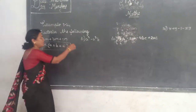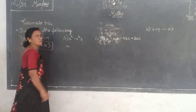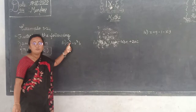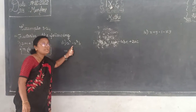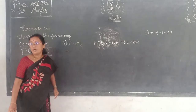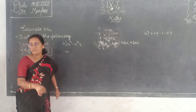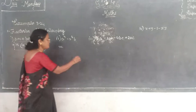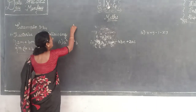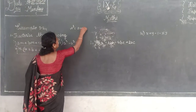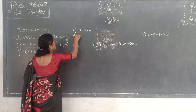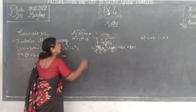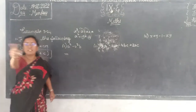Do you follow? Next one. Those who are able, you can say it out directly. A cube minus A squared B. A cube means A multiplied three times. A square means two times. So what is common here? A square. Very good. Clap your hands.